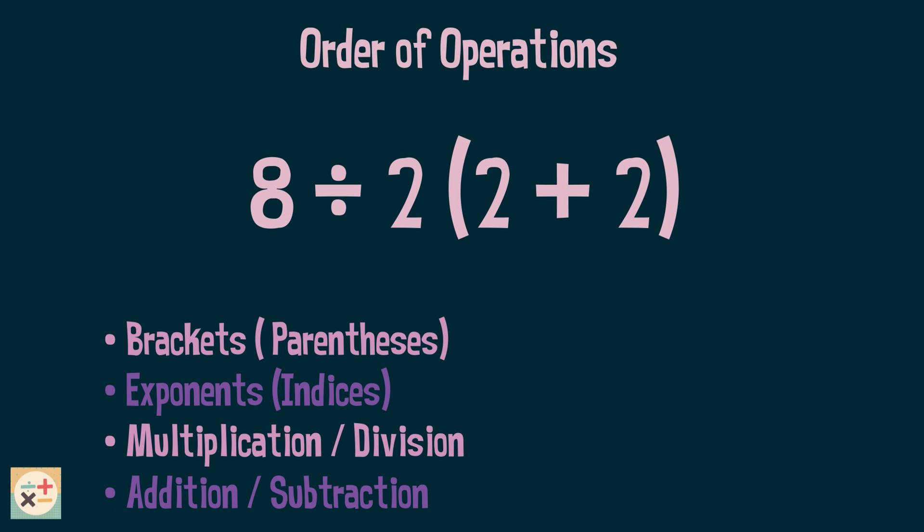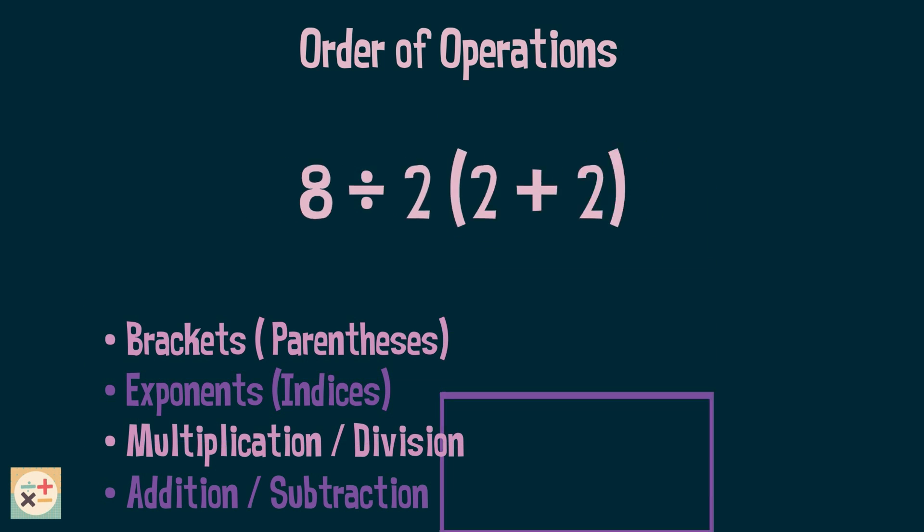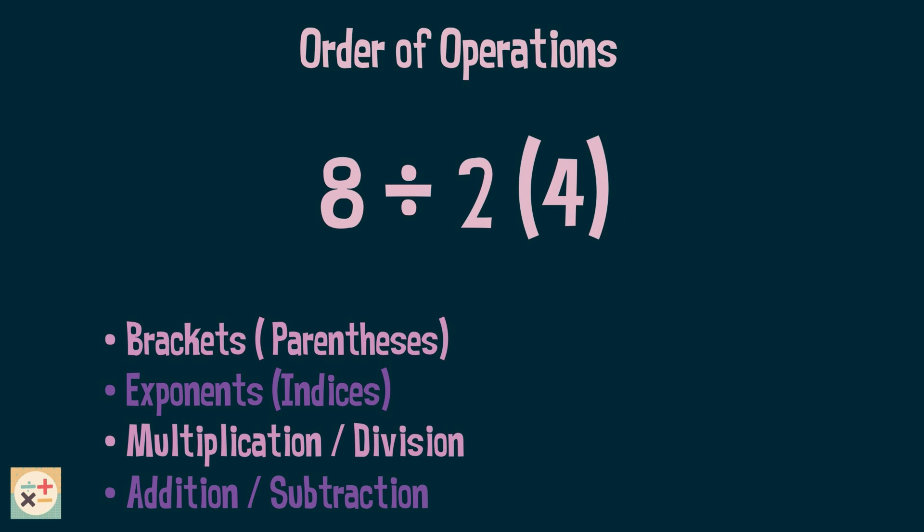Firstly, we deal with anything within the parentheses, also known as brackets. In this expression, we have 2 plus 2 within the parentheses, so we deal with this first, giving us 4. However, we wouldn't usually have a single number inside the parentheses like this. So it's best practice to rewrite this out with the multiplication sign displayed.